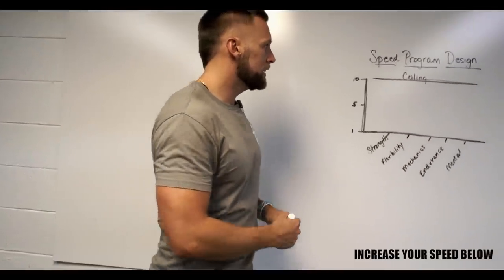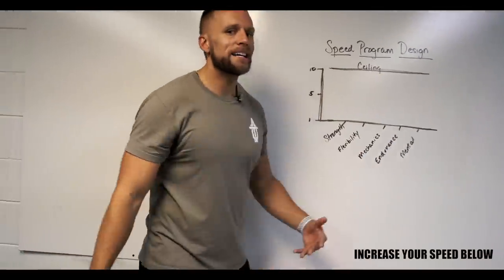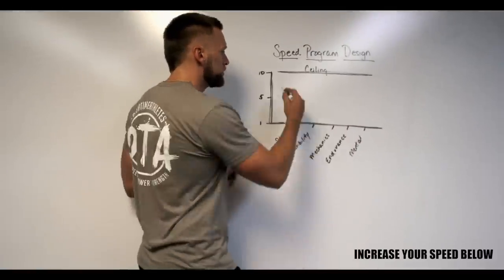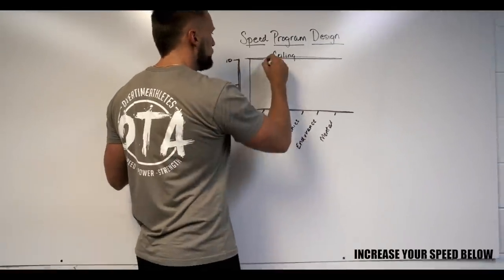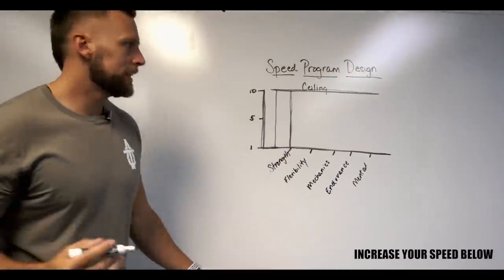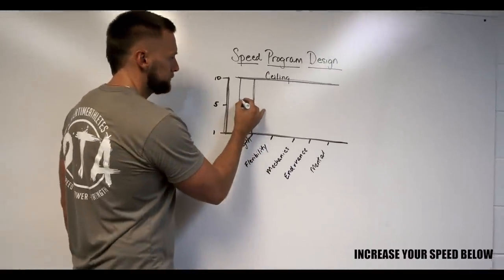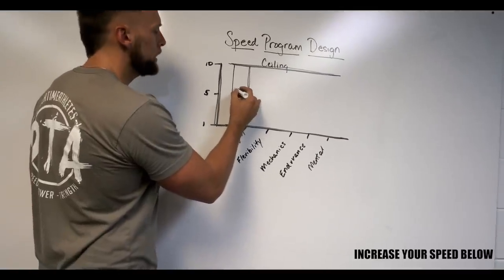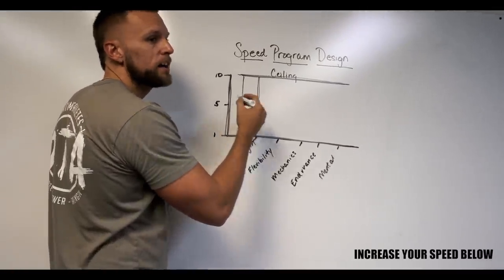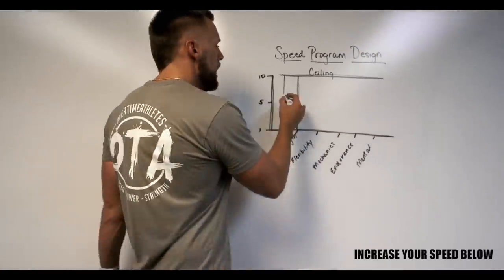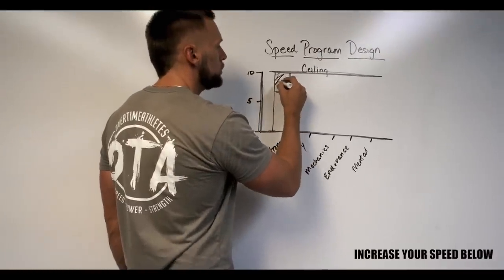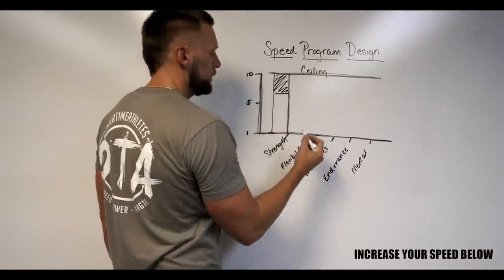Let's say I take a particular athlete — 10 being the highest potential — I'll grade them where they're at. Let's say I get an athlete in and his strength is pretty moderate; it could go up but he's decent, he's a guy who's in the weight room. I might put his strength at a six or seven, which means I have this much potential left to work with.